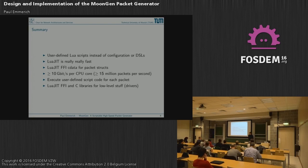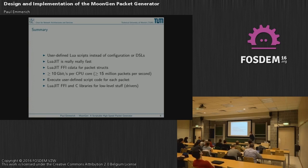We make heavy use of the LuaJIT FFI and C libraries like DPDK for low-level stuff. All the drivers we use are the DPDK drivers, and they are just LuaJIT FFI wrappers. One could write the drivers in Lua — I'm aware of the Snabb Switch project which is doing exactly that, writing the drivers in Lua. I was thinking about using those Lua drivers, but I decided for DPDK because it's slightly faster and has better multicore support.